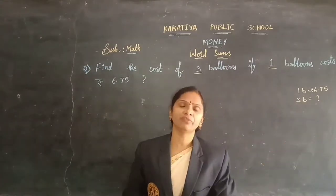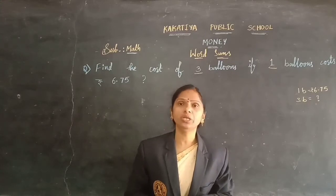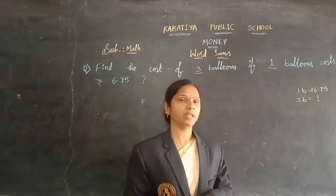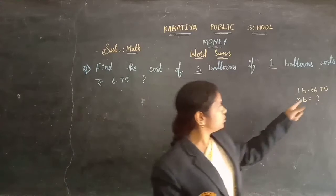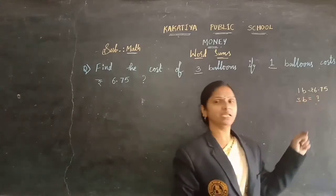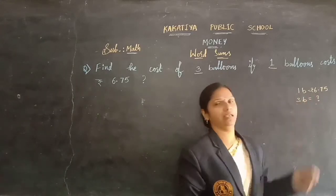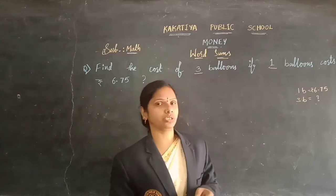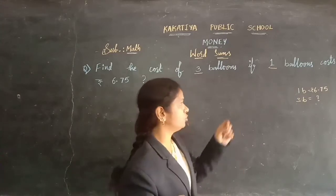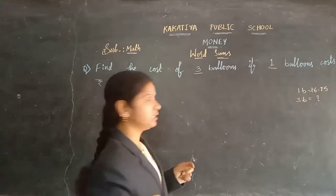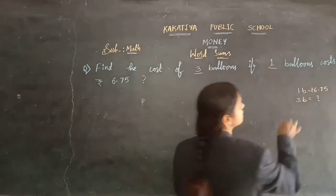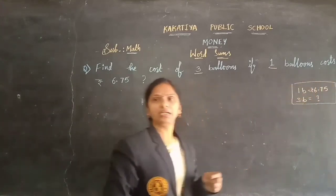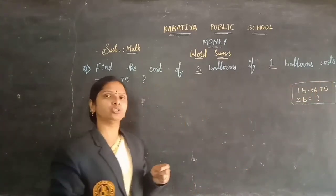When we are finding more, you need to do multiplication, children. What numbers do you need to multiply here? 6 rupees 75 paise, you need to multiply by 3, when you are finding the 3 balloons cost. So you need to multiply those 2 numbers. This problem is a multiplication problem. Come on, let's write the steps and do the problem.